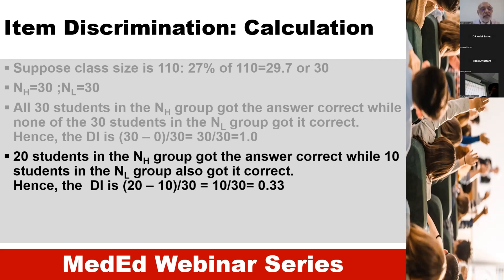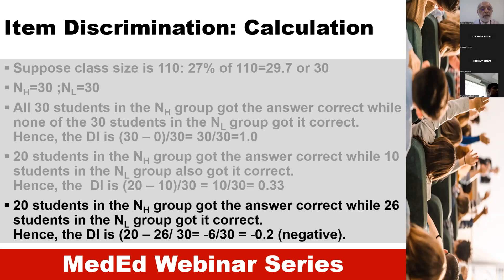In another situation, if 20 students in the higher group got the answer correct while 10 students in the lower group got it correct, then 20 minus 10 divided by 30 gives a discrimination index of 0.33. On the other hand, if 20 students in the higher group got the answer correct while 26 in the lower group did, this means that lower group students are answering more correctly than the higher group, so the discrimination index would come out negative.